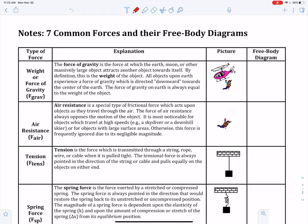So let's take a look at our first force, which is called weight or the force of gravity on an object. The explanation is this: the force of gravity is the force at which the earth, moon, or other massively large object attracts another object towards itself. By definition, this is the weight of an object. So you can use the terms force of gravity and weight interchangeably. They are the same thing. All objects upon earth experience a force of gravity, which is directed downward towards the center of the earth.